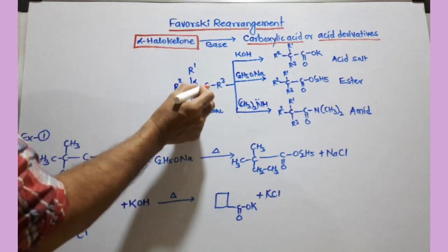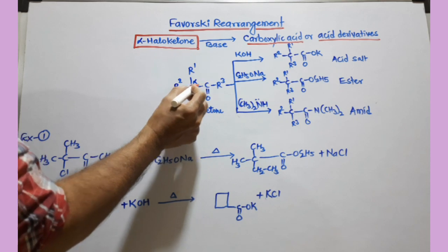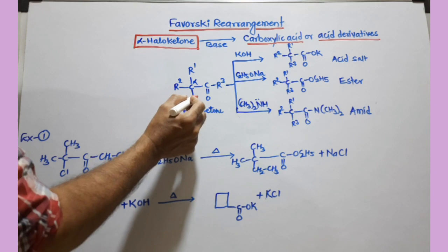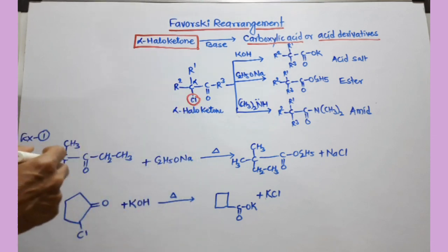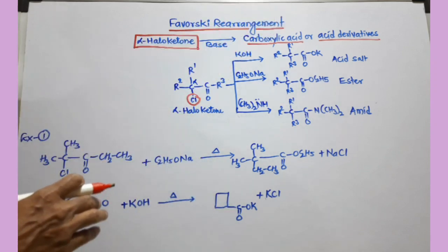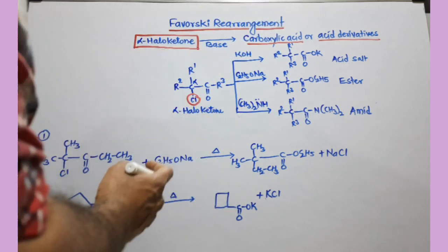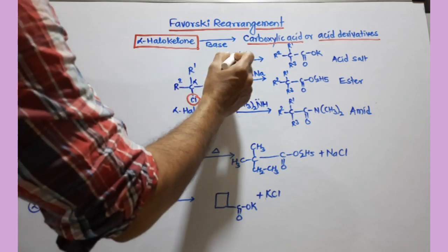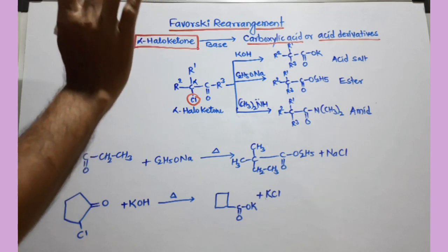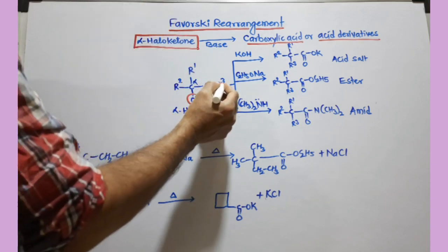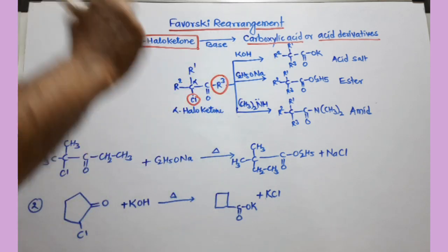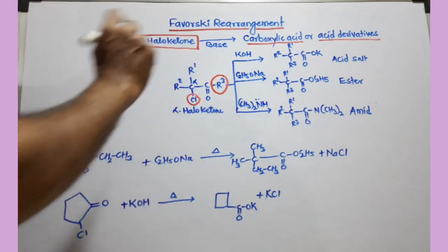Now, I have given here a general alpha-haloketone. This ketone has a carbonyl group. Next to the carbonyl group is the alpha carbon — this is also alpha. So at the alpha carbon there must be a halogen. If there is a halogen present at the alpha carbon, we can have this reaction. Also, whatever alkyl group R3 is there, there must be at least one alpha hydrogen — one alpha hydrogen is required.